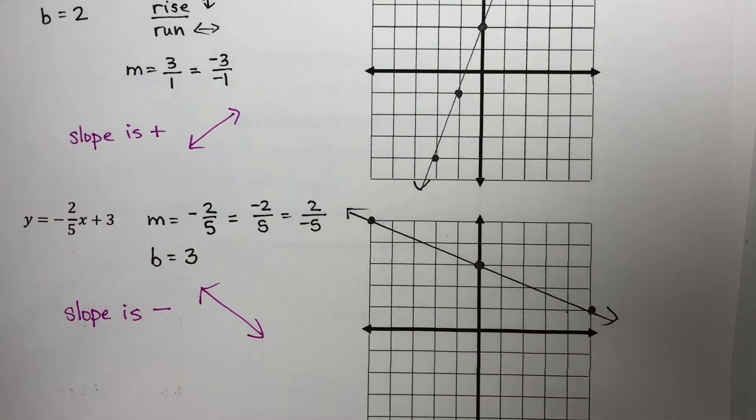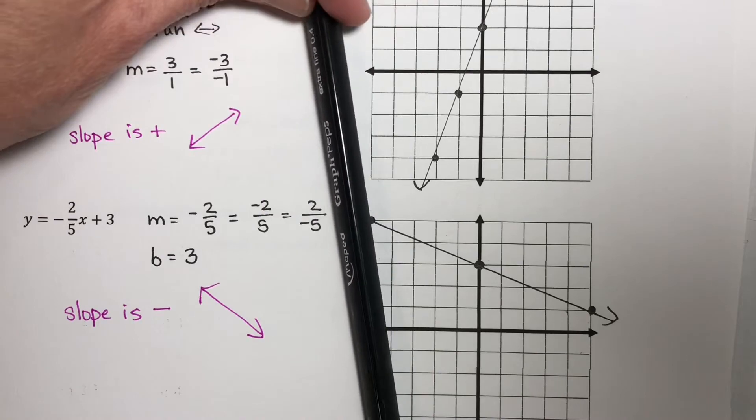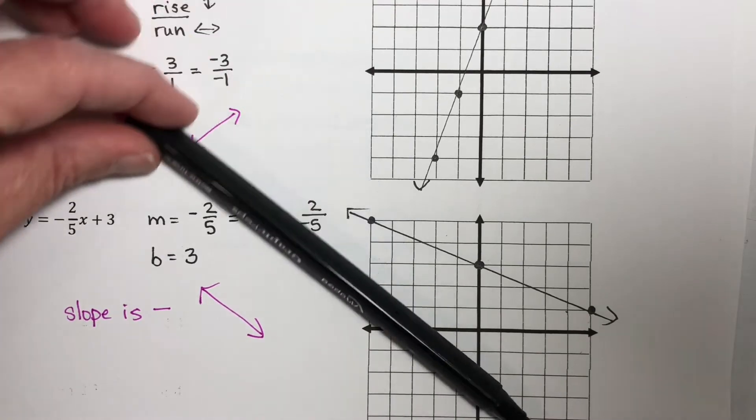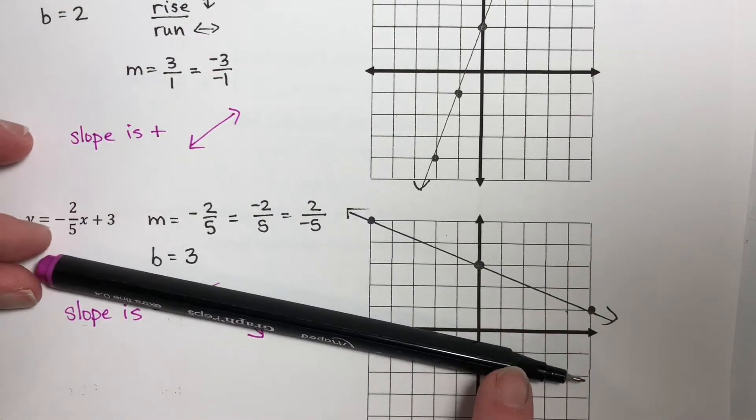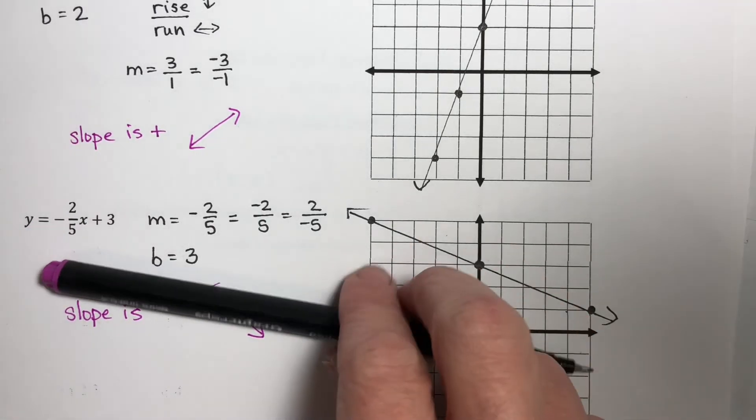How quickly it goes down depends on the numerical value. If your slope is a really big negative number, like negative 100, it's going to be going down really quickly. If it's like negative 0.25, it's not going to be going down so quickly, but it will still be going down.